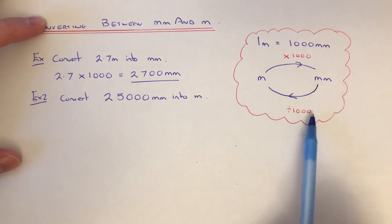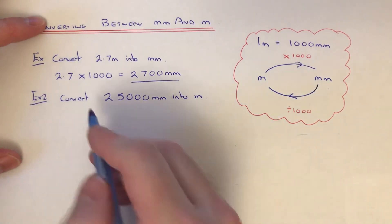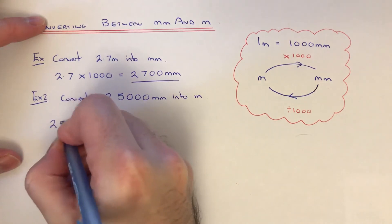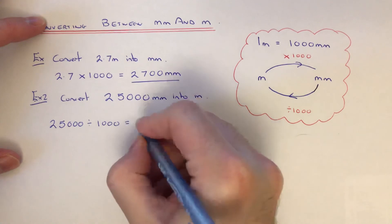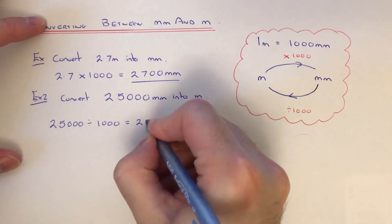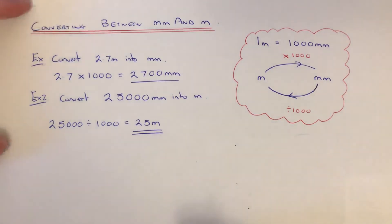meters. So to get millimeters into meters, we're going to divide the number by a thousand. So we do 25,000 divided by a thousand, which gives an answer of 25 meters.